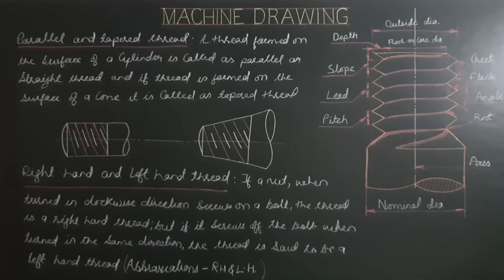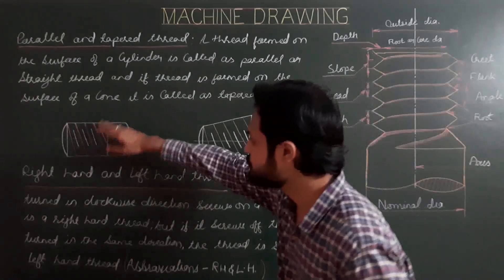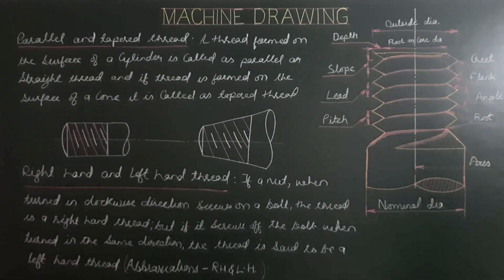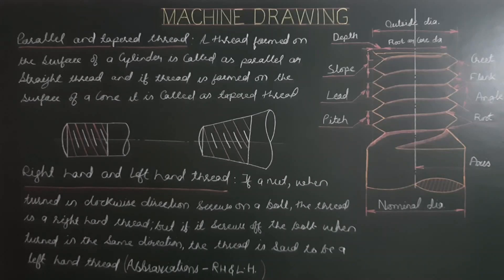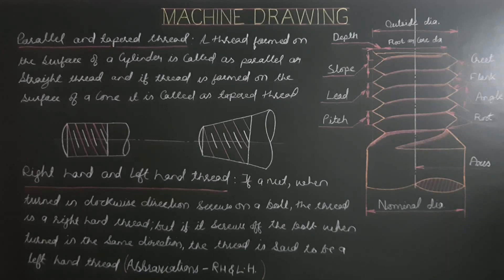A thread found on the surface of a cylinder is called a parallel or straight thread. If the thread is found on the surface of a cone, it is called a tapered thread.